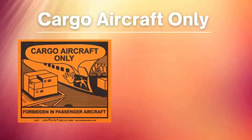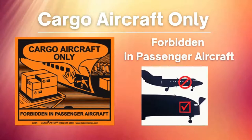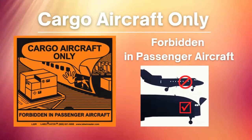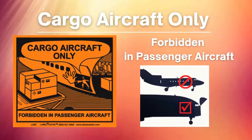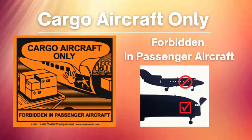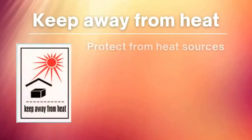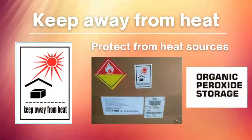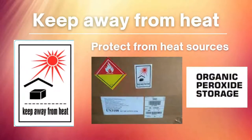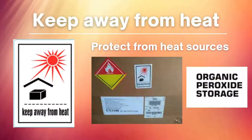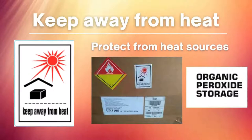This one is the Cargo Aircraft Only label. It indicates that this package is not cleared for passenger aircraft. This one is the Keep Away from Heat label. It indicates that this package needs to be protected from sunlight or any sources of heat.